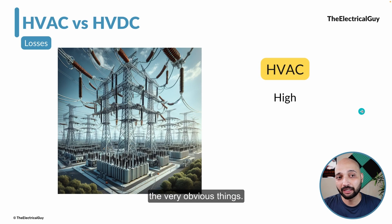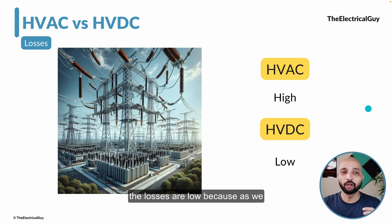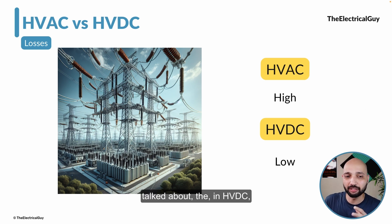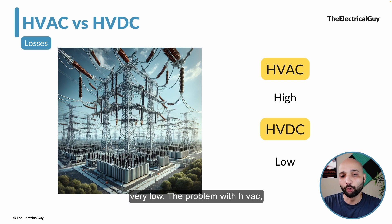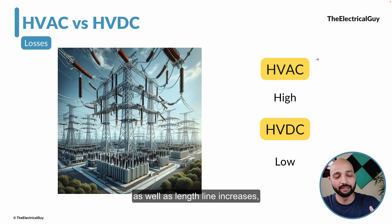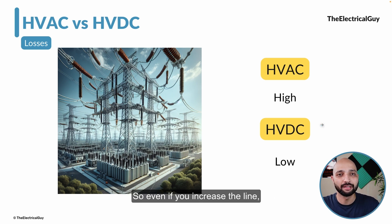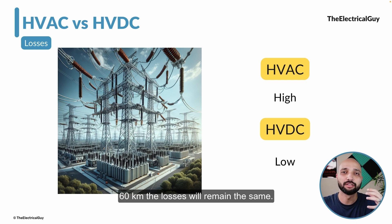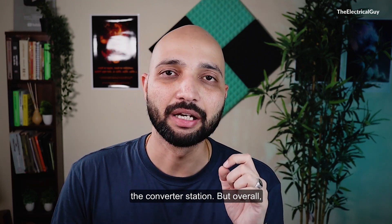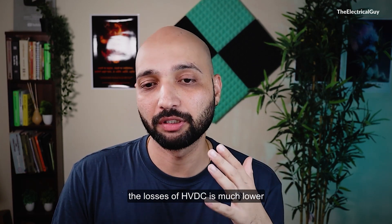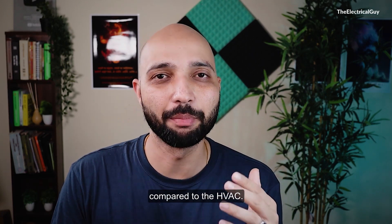Moving on to the very obvious parameter: losses. In HVAC, transmission losses are very high. In HVDC, losses are low because only resistance plays a role — there is no inductance or capacitance. The problem with HVAC is that as line length increases, losses also increase. But with HVDC, losses remain relatively constant even as line length grows. There are some losses in the converter stations, but overall the losses of HVDC are much lower compared to HVAC.